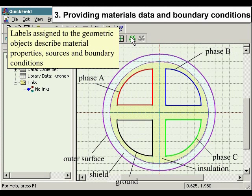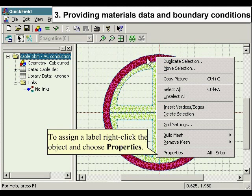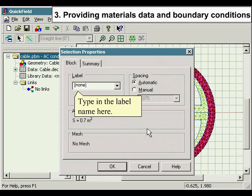Labels assigned to the geometric model describe material properties, sources, and boundary conditions. To assign a label, right-click the object and choose Properties. Type in the label name here.